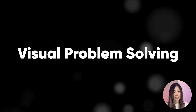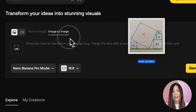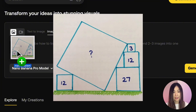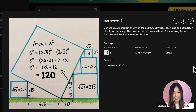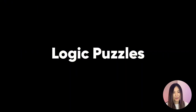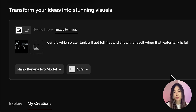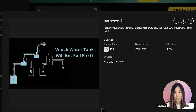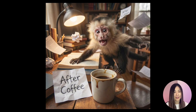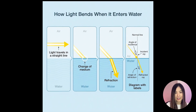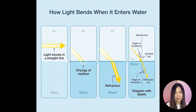Nano Banana Pro can actually reason through problems and show you the solution visually. I gave it a classic geometry problem and it labeled the steps, the formula, and even the final answer directly on the image — so every student is about to do their homework suspiciously perfectly next semester. It can also solve logic puzzles. I asked it to identify which tank fills up first and show the moment when that specific tank is full, and this is what we get. This makes Nano Banana Pro a powerful tool for teachers and parents — you can instantly create before-and-after visuals, show cause and effect, and turn abstract concepts into something students immediately understand.